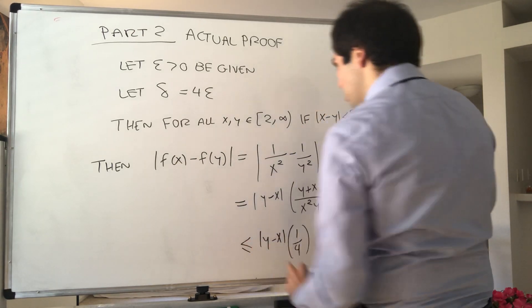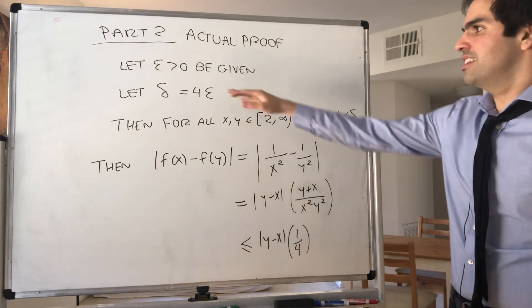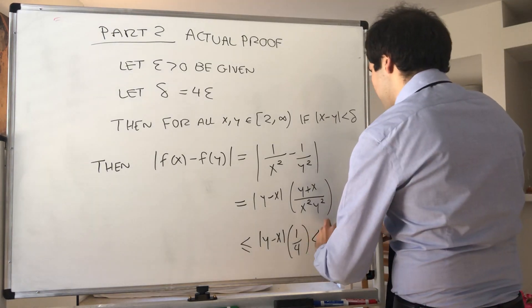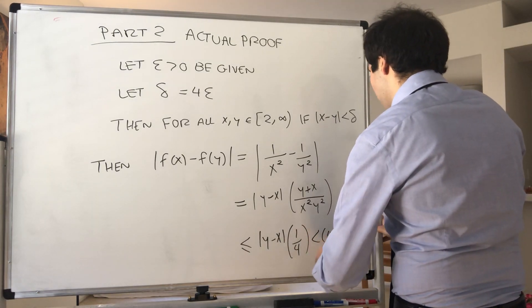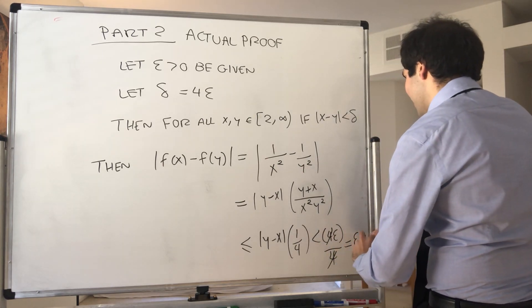And now, remember, y minus x is less than delta, which is 4 epsilon. So this is 4 epsilon over 4. And this cancels out. And in the end, we get epsilon.